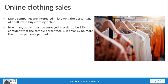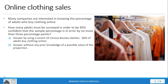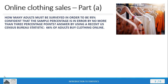Let's step through this piece by piece to show you how this can be solved. First, we want to answer by using a recent US Census Bureau statistic that 66% of adults buy clothing online. And then we're going to answer without any prior knowledge of a possible value of the proportion. So first, we're going to use the statistic of 66% of adults buying clothing, and find how many adults must be surveyed to be 95% confident within 3 percentage points.